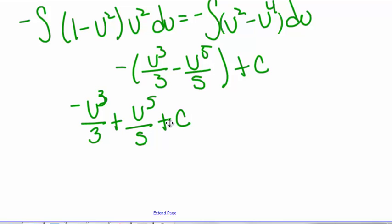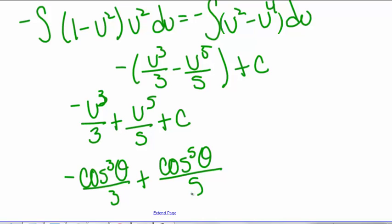And u is cosine of theta. So you have negative cosine cubed of theta divided by 3 plus cosine to the fifth of theta divided by 5 plus a constant.